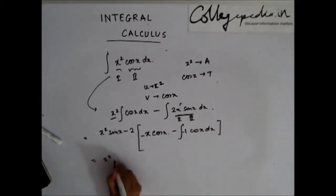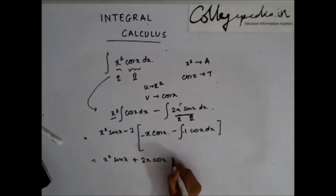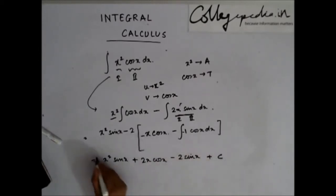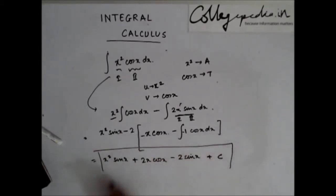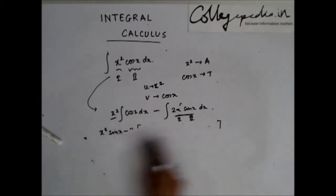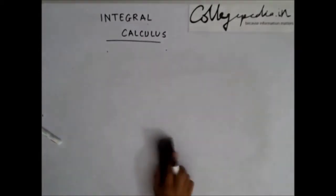So the final result becomes x²·sin(x) + 2x·cos(x) − 2·sin(x) + C. That is the answer. Before we move further, I would like to discuss some standard formulae which we had missed in the beginning.